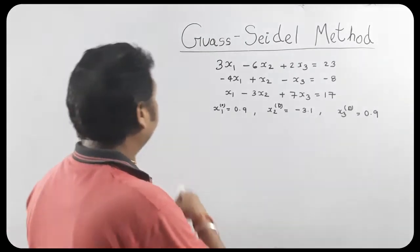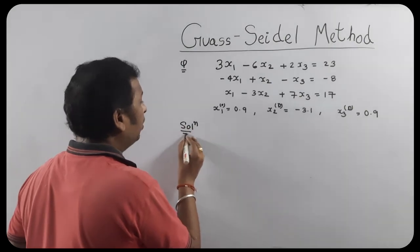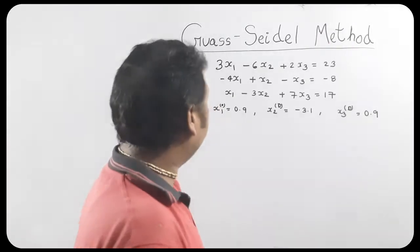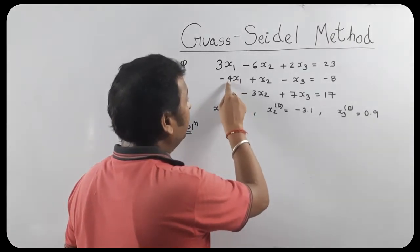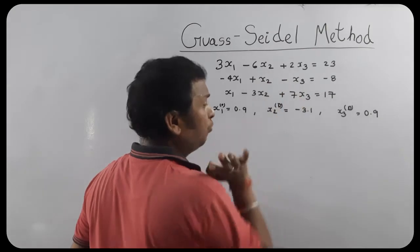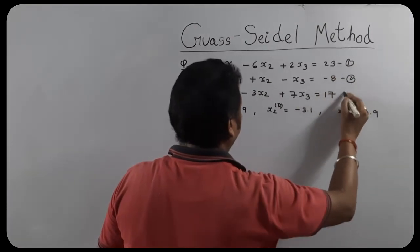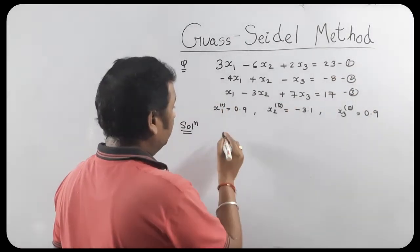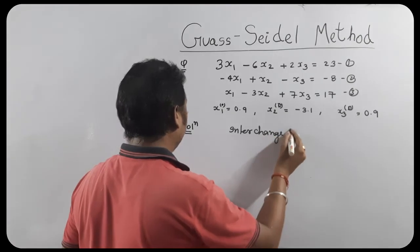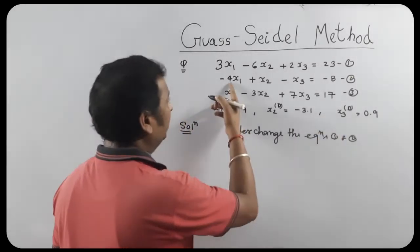Now I am going to solve this question. For this question, what we do first is write it in diagonally dominant form. How do we write in diagonally dominant form? Just interchange the order. If we put this equation here, x1 coefficient is minus 4 — taking mod, it's 4. x2 coefficient is 1, x3 coefficient is 1. So if we interchange the first and second equations, its order only interchanges.